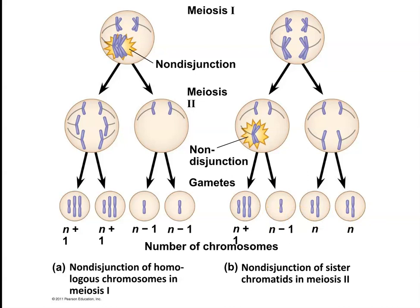If this happens on an autosome, the baby will not develop correctly, with the exceptions of chromosome 21, which is Down syndrome, chromosome 13, which is Patau syndrome, and chromosome 18, which is Edwards syndrome.